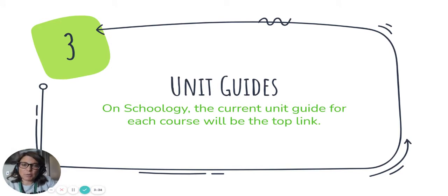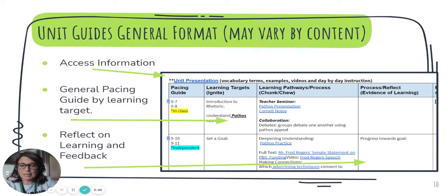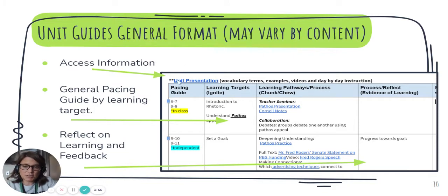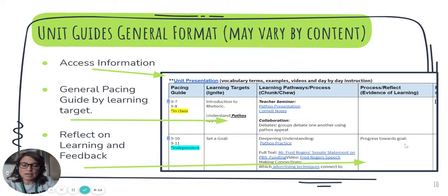Unit guides are something we use school-wide to help learners understand how to access information and develop independent learning skills. This is an example of a unit guide. Learners will have a general pacing outline of the class and access to information so that if they are gone for the day or on extended leave, they have the unit presentation or other access to materials the teacher is using. They also have a place to process, reflect, and track their learning.